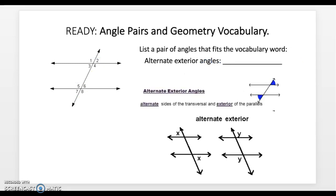Then for alternate exterior angles, you're looking at the angles that alternate the sides of the transversal and the exterior of the parallel lines. In our case, we have angles 1 and 8 and angles 2 and 7.